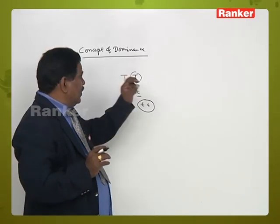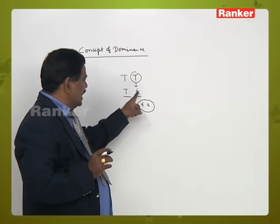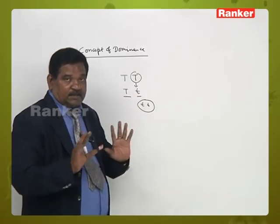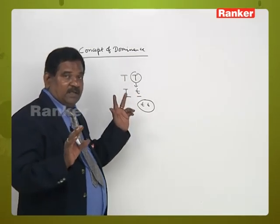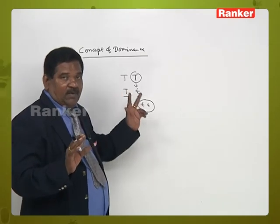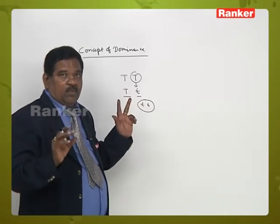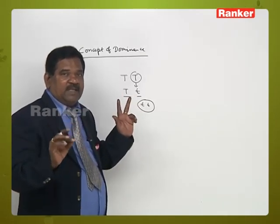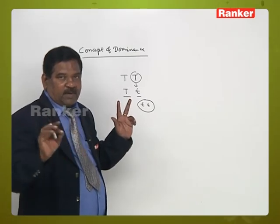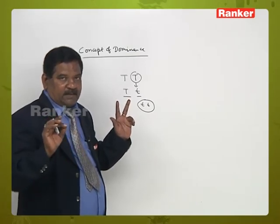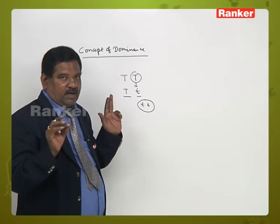Whenever the normal gene is present, the defective character is not expressed. So when a tall allele and a dwarf allele are present together, only tallness is expressed and dwarfness never expresses. This is the concept of dominance.